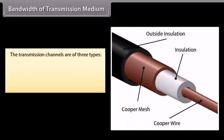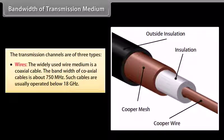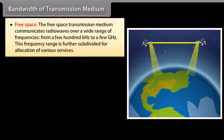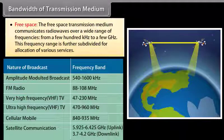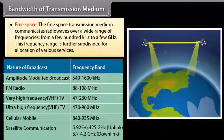Bandwidth of transmission medium. The transmission channels are of three types. Wires: the widely used wire medium is a coaxial cable. The bandwidth of coaxial cables is about 750 MHz, and such cables are usually operated below 18 GHz. Free space: the free space transmission medium communicates radio waves over a wide range of frequencies, from a few hundred kilohertz to a few gigahertz.